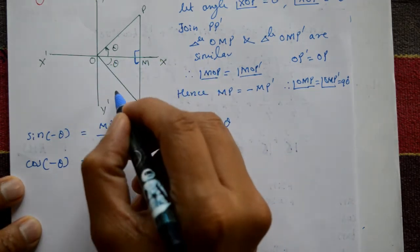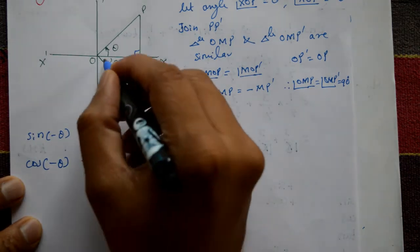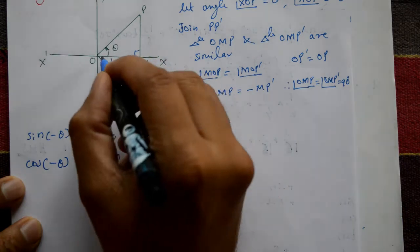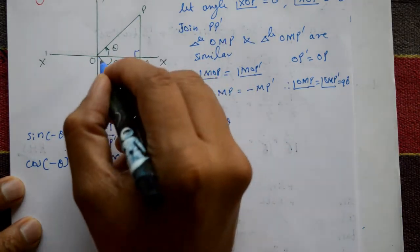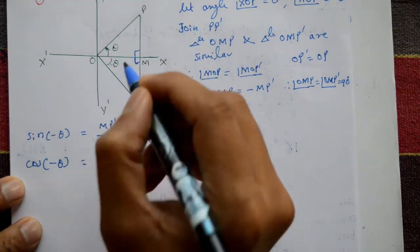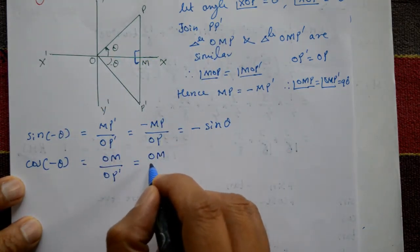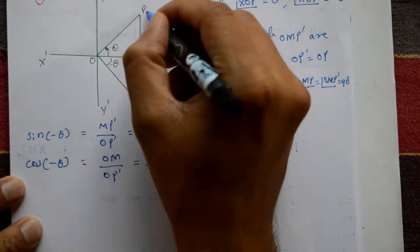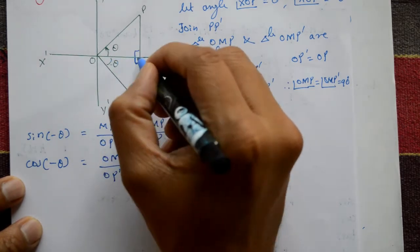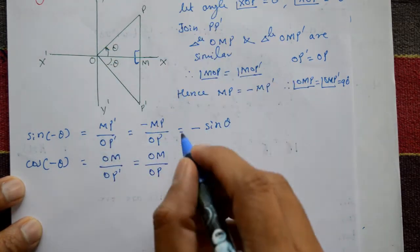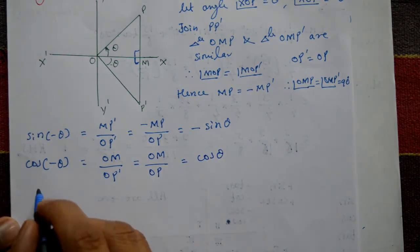Second: cosine of minus theta. Cosine means adjacent side over hypotenuse, which is OM upon OP dash. In these two triangles, OM is common. So OM divided by OP dash equals OM divided by OP, which is just cos theta. Therefore, cos of minus theta is equal to cos theta.